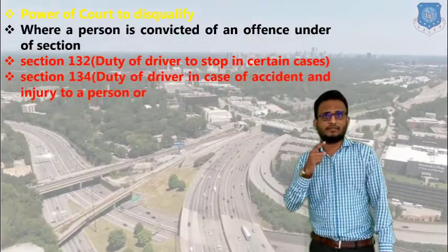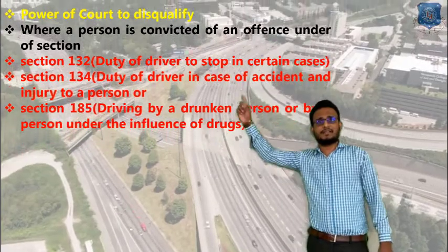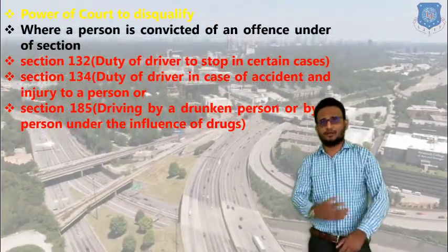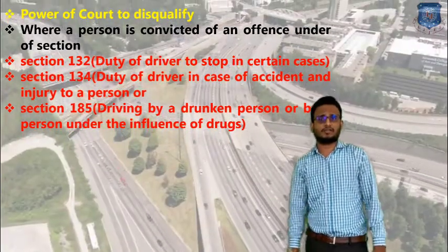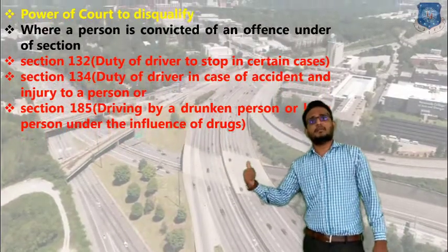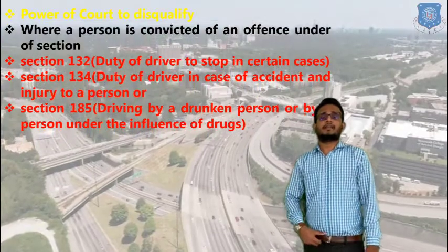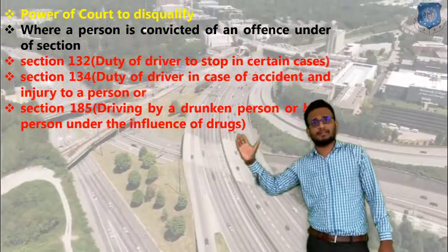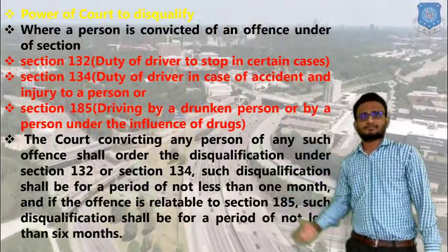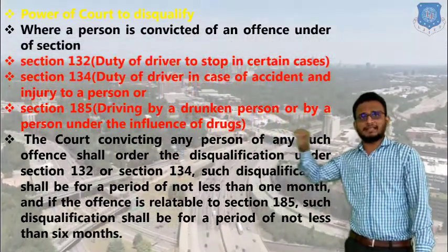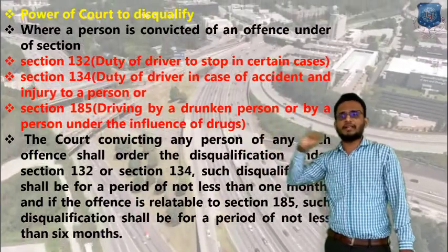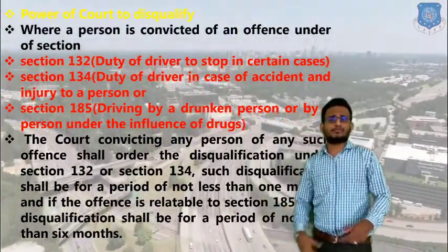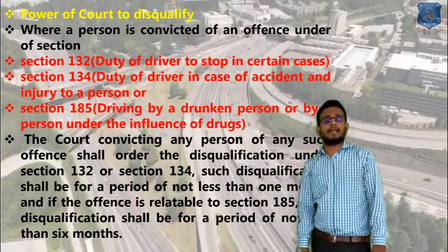Key sections under the Motor Vehicle Act related to licensing are Section 132, Section 134, and Section 185. Section 132 covers stopping the vehicle; Section 134 covers accidents and injury to a person; and Section 185 covers driving under the influence of drugs and alcohol. If found guilty under these sections, one faces imprisonment and heavy fines.